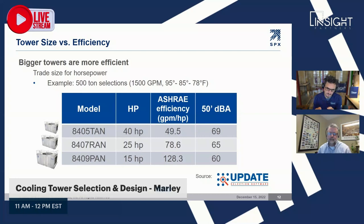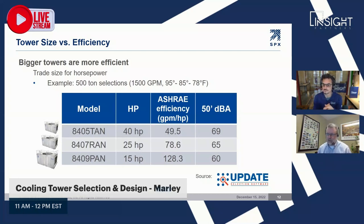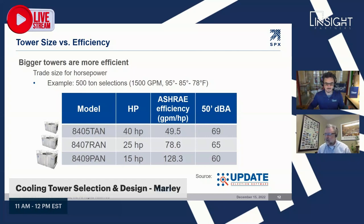When given multiple options, maybe 5, 10, 15 years ago a lot of people talked about wanting efficiency but tended to pick the most economical model. That trend is continuing to shift — people are understanding the benefits, particularly from greenhouse gas emissions standpoints, of getting a more efficient cooling tower. We do sell quite a few higher-efficiency models now, and in this example, many users would purchase the 8407 as opposed to the 8405.